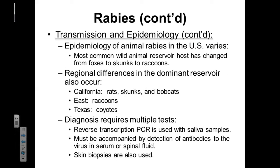If we look at the epidemiology of animal rabies within the United States, the most common wild animal reservoir has been changing throughout the country. It used to be foxes, then it was skunks, and now it's currently raccoons. There are also some regional differences. Within California, rats, skunks, and bobcats are big reservoirs. Within the East Coast, it's raccoons, and in Texas, it's coyotes.